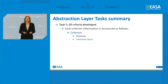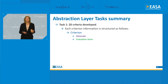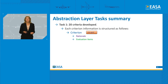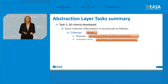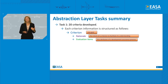As a summary of task one, we developed 20 criteria, using a certain structure for the information for each criterion. A criterion itself is one goal — a goal that we need to meet for development assurance. We have the rationale, which shows the intent of a criterion to facilitate understanding in the future, particularly when certain terminology needs further clarification by other stakeholders. The evaluation items are key attributes to meet the criterion, and those key attributes reflect what a process should ensure or provide as a result.